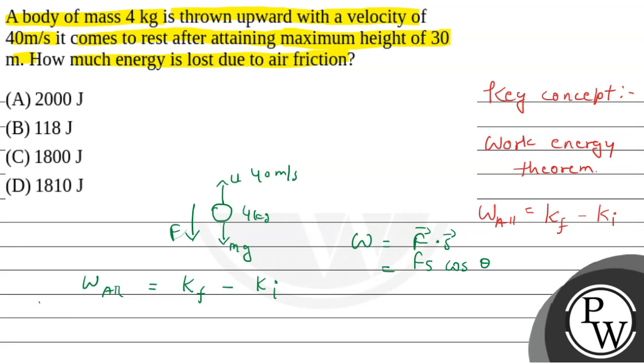We can write the total work done by all forces: the air friction work done plus mg work done, that is equal to final kinetic energy. At last, the object comes to rest, so final kinetic energy is zero, minus initial kinetic energy, which is half mv square.